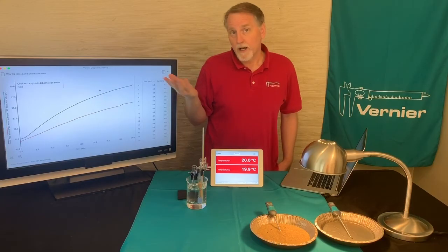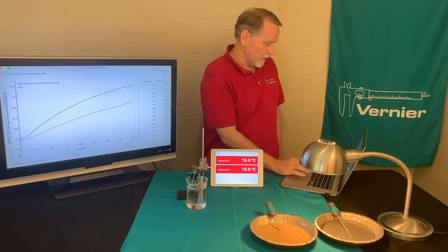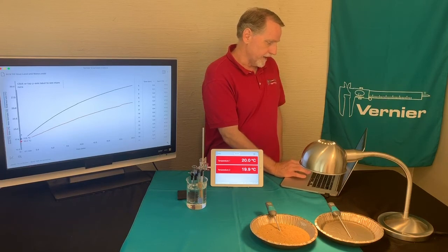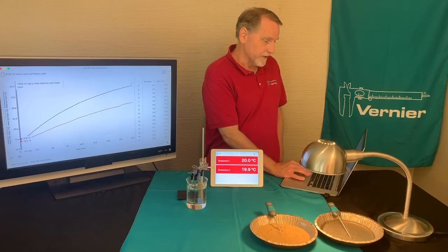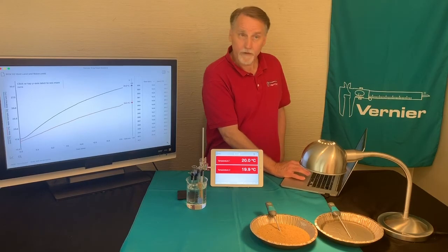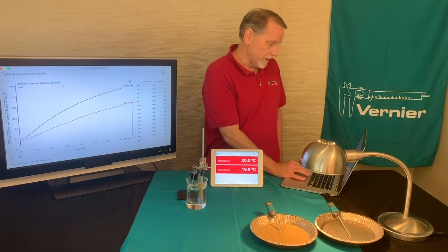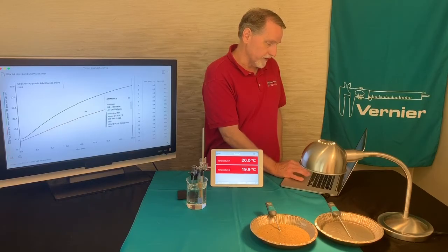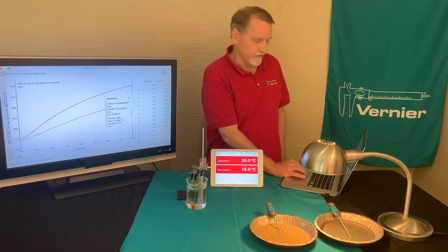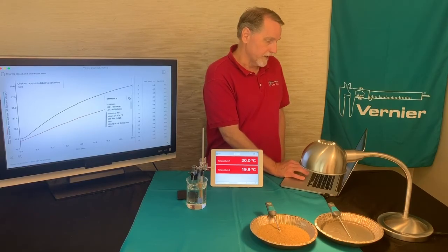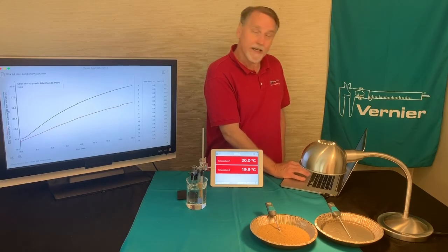The experiment asks you to find out what the initial temperature and the final temperature are. There are a couple of ways to do this. One would be to just click down here and get an initial temperature, then come up to the very end, click there, and be able to get the final temperature. Or you could use the statistics function to get the minimum and the maximum for each run, which would tell you the temperature change. This is the data for trial one, the heating curve.